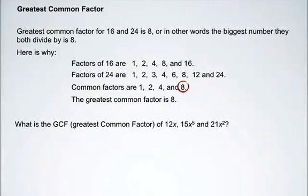So what is the greatest common factor of 12x, 15x to the 5, and 21x squared?